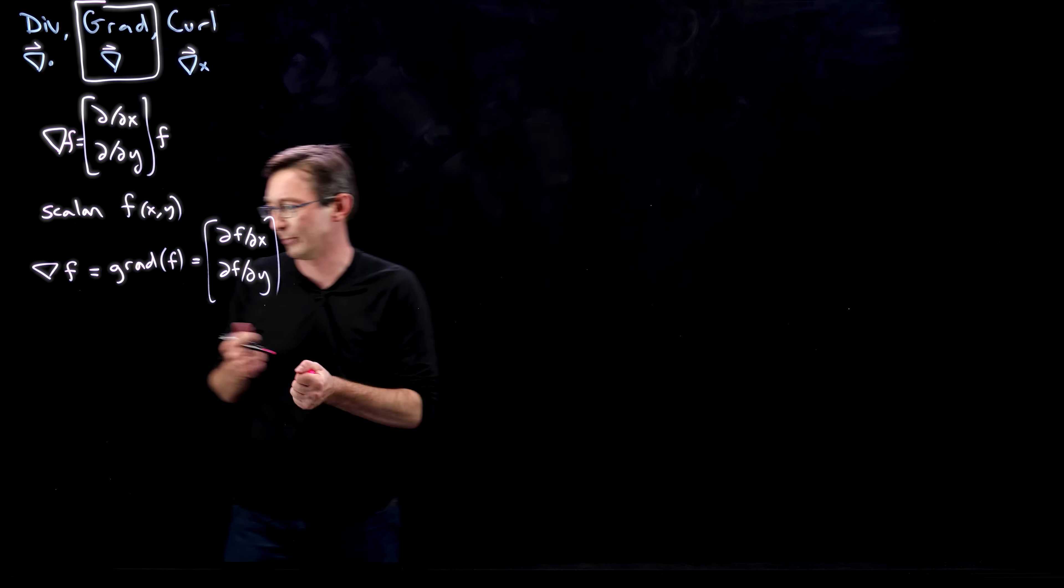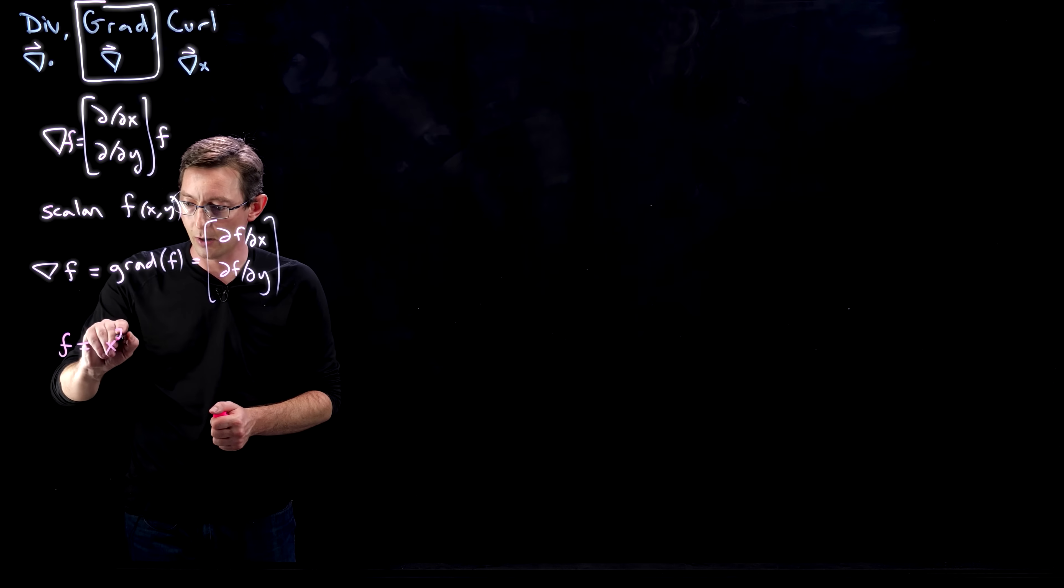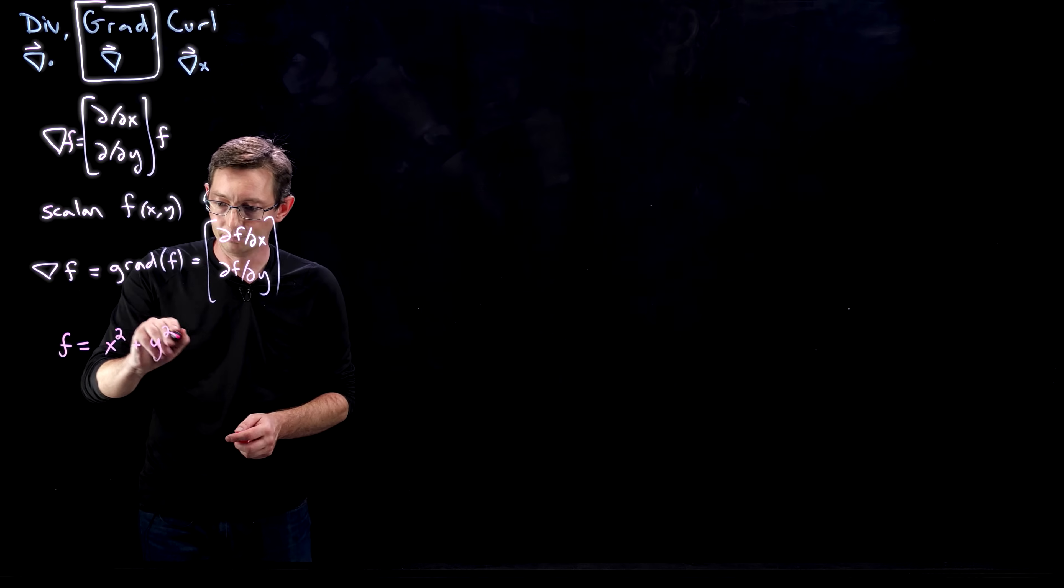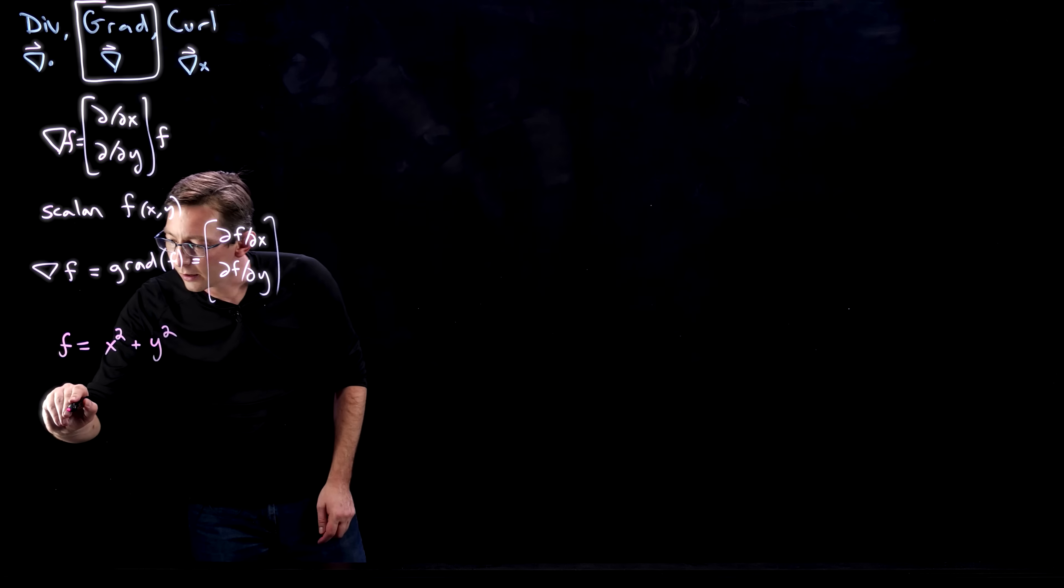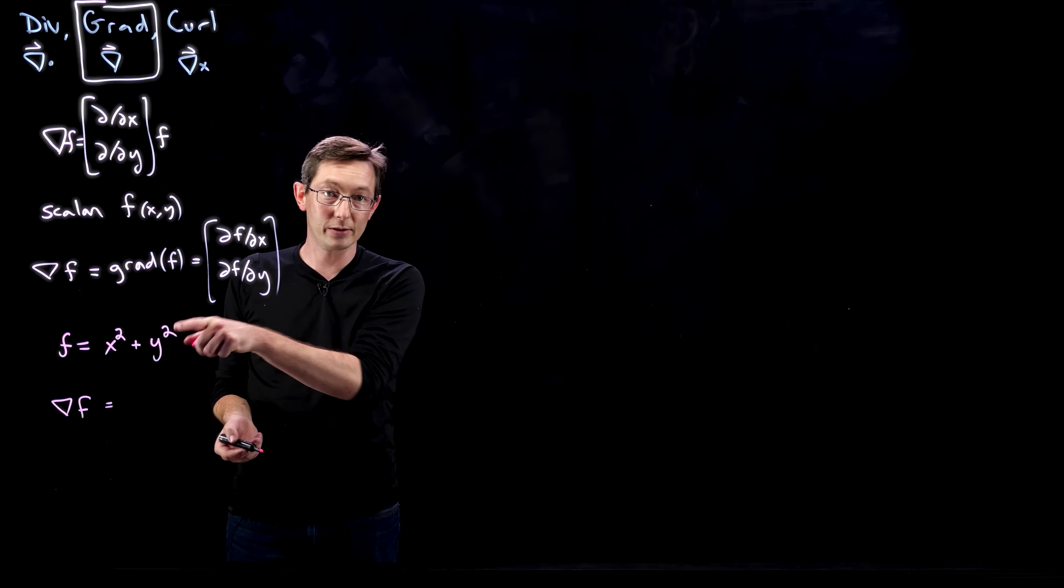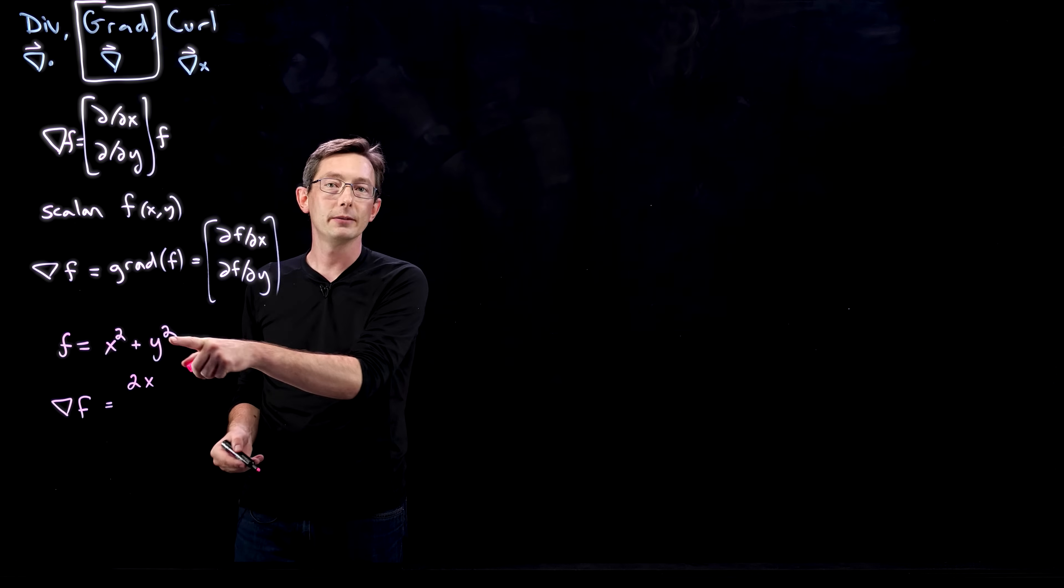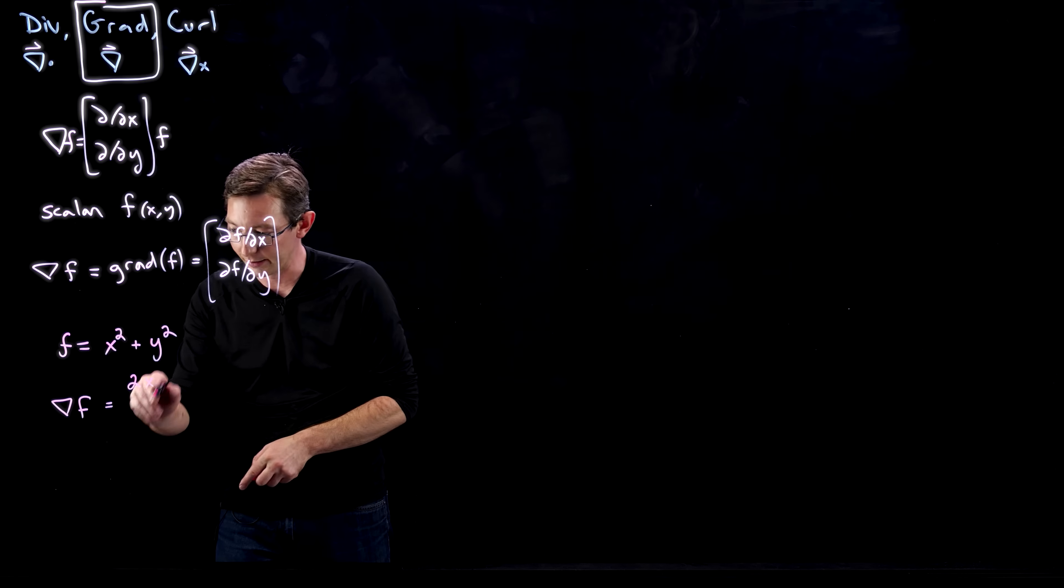We could create an example. If f was, I don't know, x² + y², then the gradient of f is going to be the partial of this with respect to x, which is 2x in the first component, and the partial with respect to y, which is 2y, in the second component.